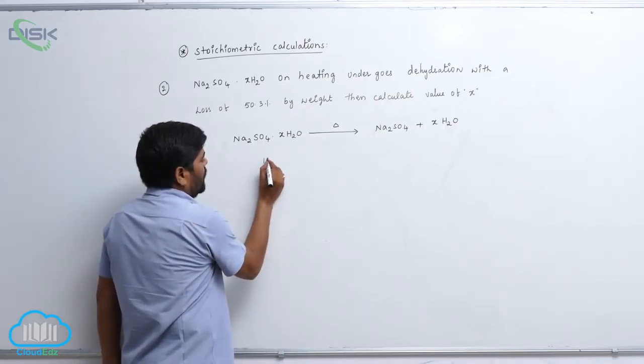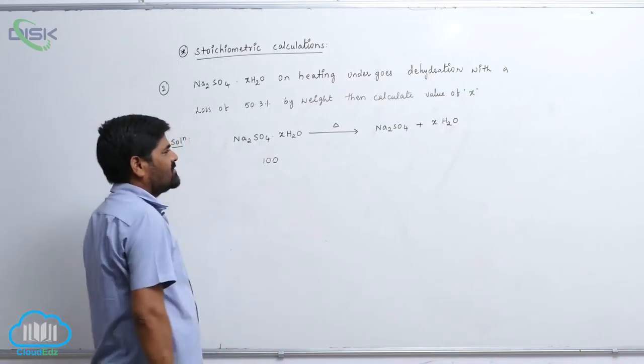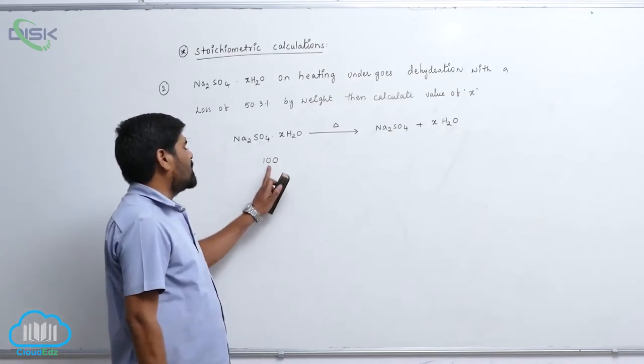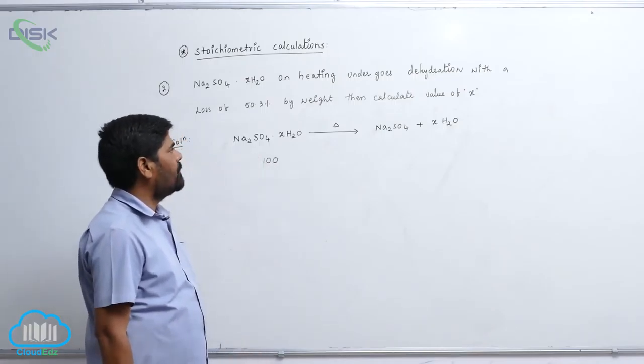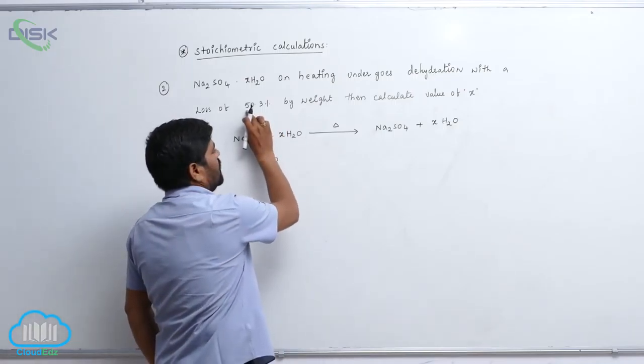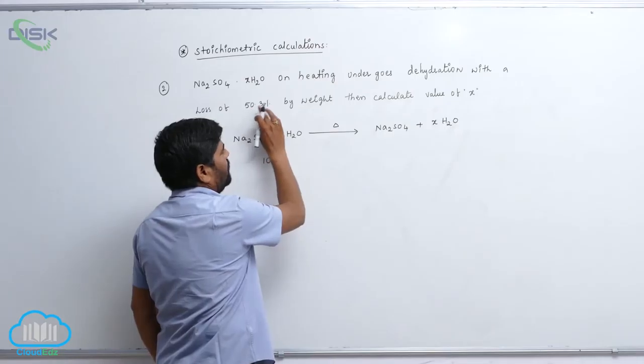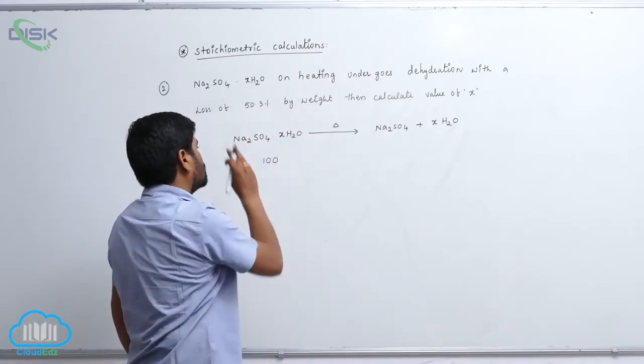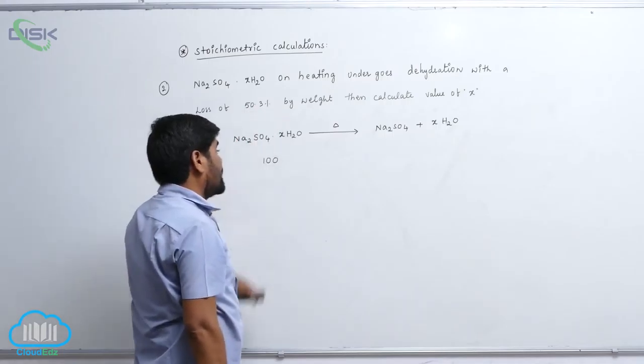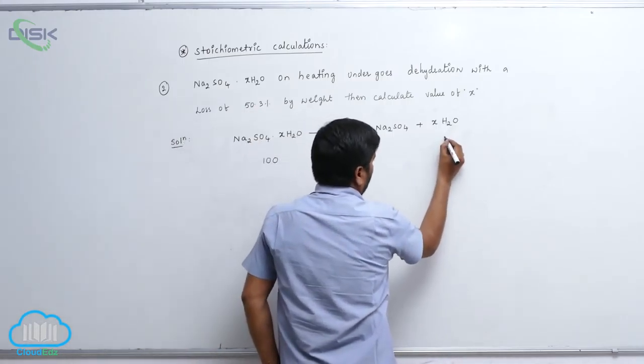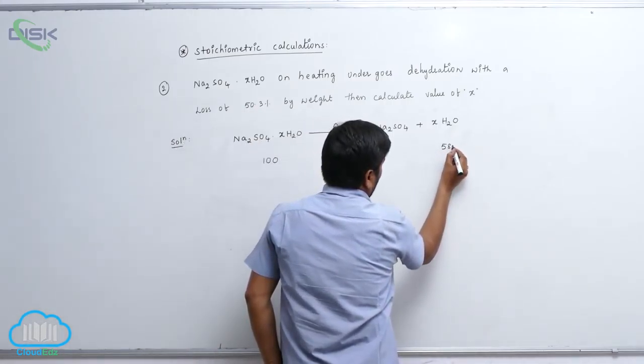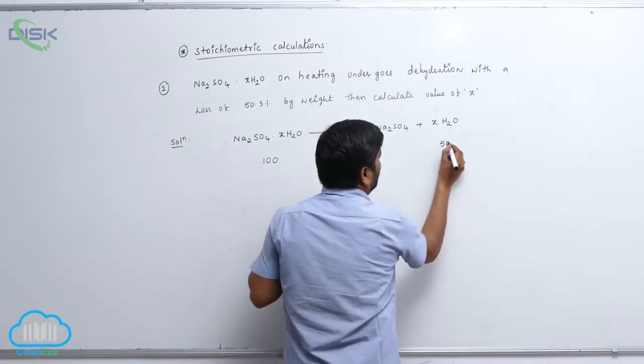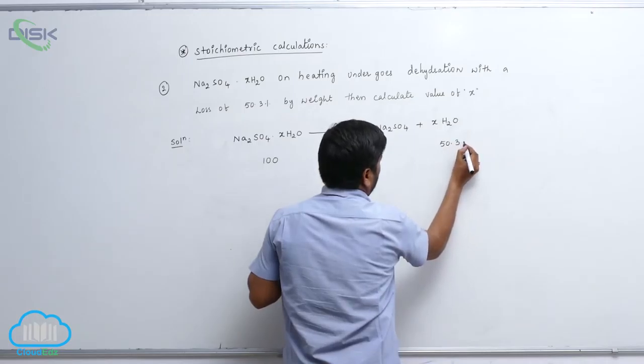Now, initially it is 100 percentage, because without dissociation it is 100 percentage. How much amount of water is lost from the sodium sulfate H2O? 50.3 percentage is lost. Therefore, this is 50.3 percentage.